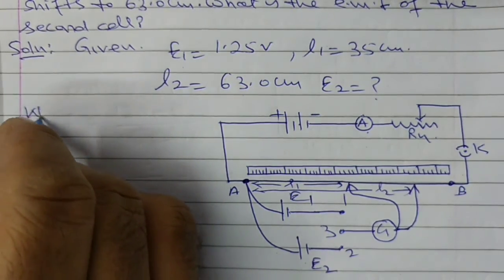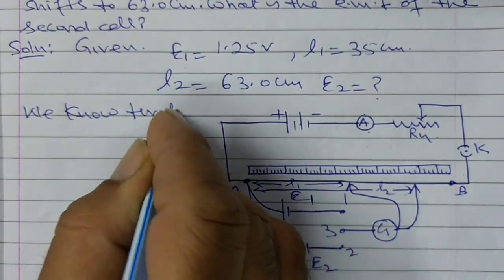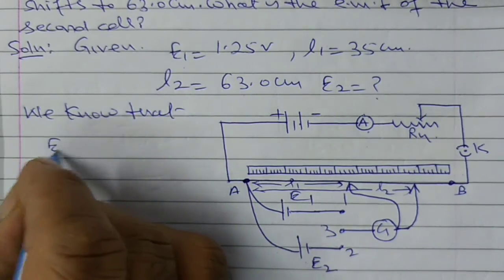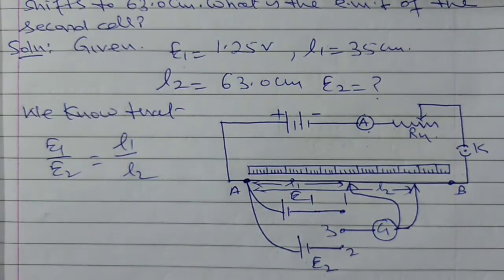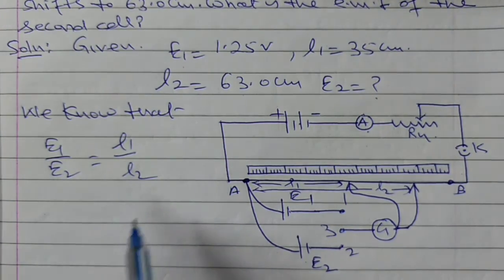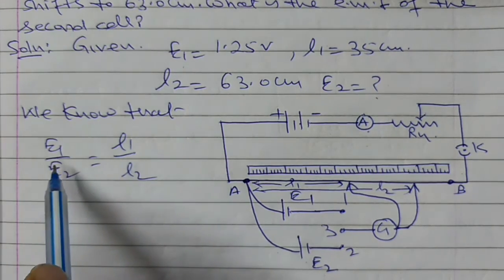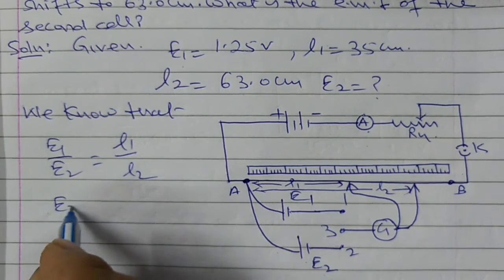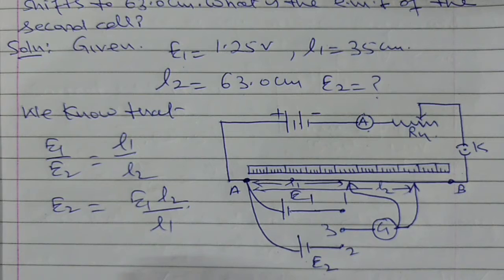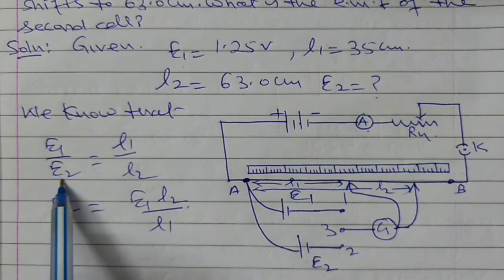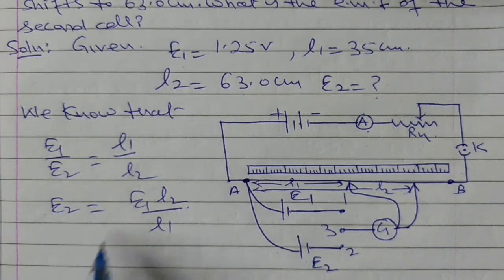Now E2 is to be calculated. Then we know that E1 upon E2 equals L1 upon L2. E2 equals E1 times L2 upon L1. Therefore this E1 into L2 upon L1.